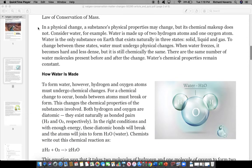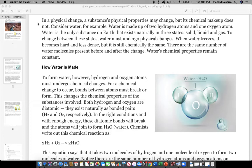In a physical change, a substance's physical properties may change, but its chemical makeup does not. Consider water, for example. Water is made up of two hydrogen atoms and one oxygen atom. Water is the only substance on Earth that exists naturally in three states.